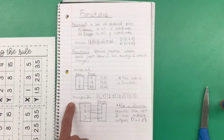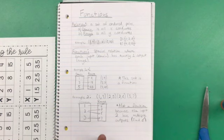However, example 2, we've got four ordered pairs. We've got (1, 4), (2, 5), (2, 6), and (3, 7).